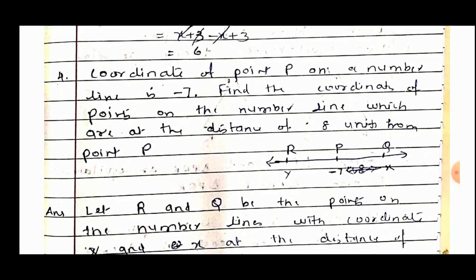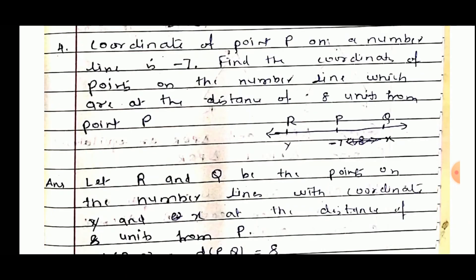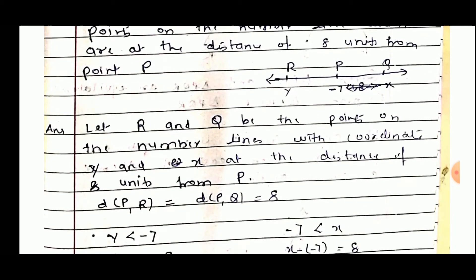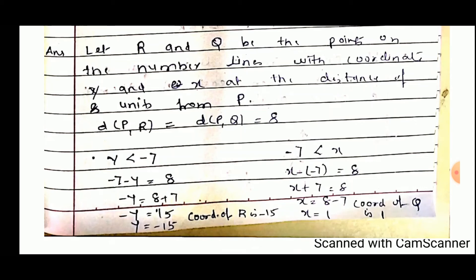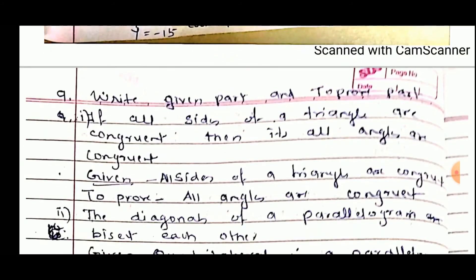The coordinate of point P on a number line is minus 7. Find the coordinates of points on the number line at a distance of 8 units from P. Let Q and R be the two points with coordinates x and y at a distance of 8 units from P. Point R is to the left of P, so y is less than minus 7: minus 7 minus y equals 8, giving y equals minus 15. For Q to the right: x minus (minus 7) equals 8, so x plus 7 equals 8, giving x equals 1.